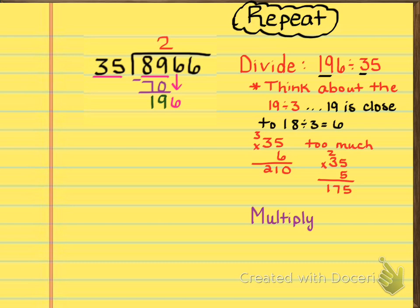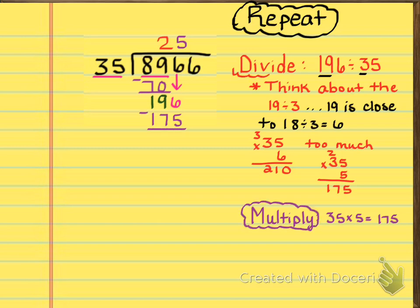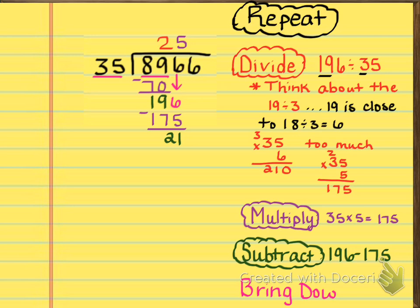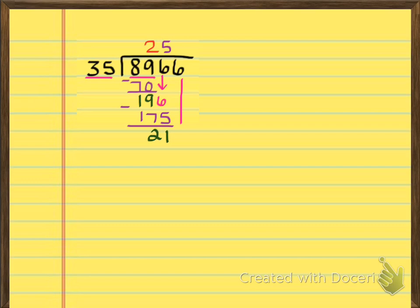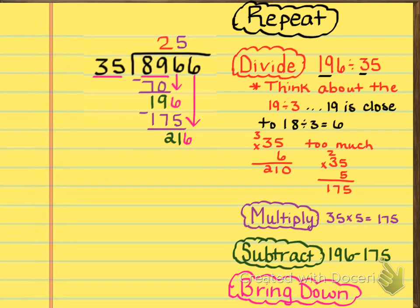Then the next step we're going to do is to multiply that 35 times 5. So you can see that we put it in purple right up there in the top. 5 times 35 gives us the 175. And then you're going to do the next step, which is to subtract. So we're going to be subtracting 175 from 196, and we get 21 left over. And then you're going to bring down, so that last step is where we bring that 6 down again. And now we have 216.